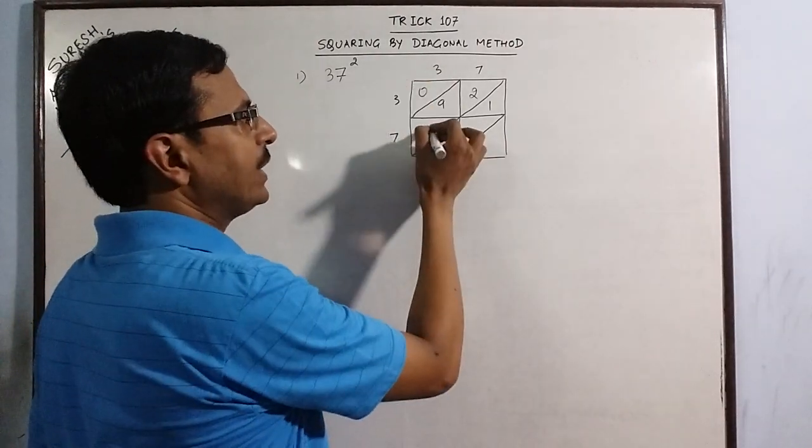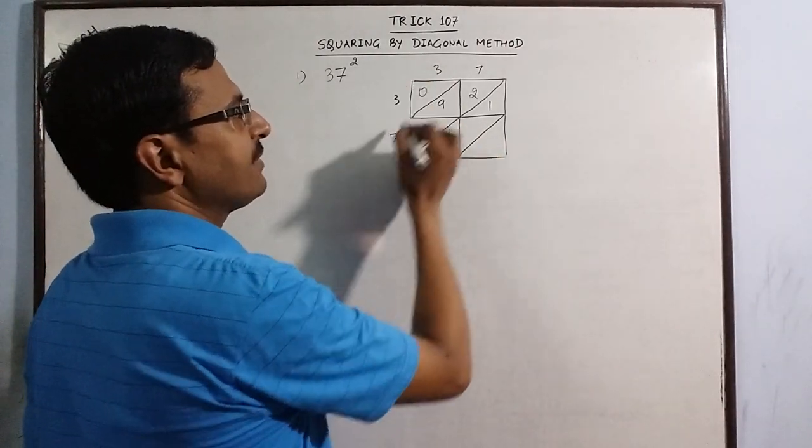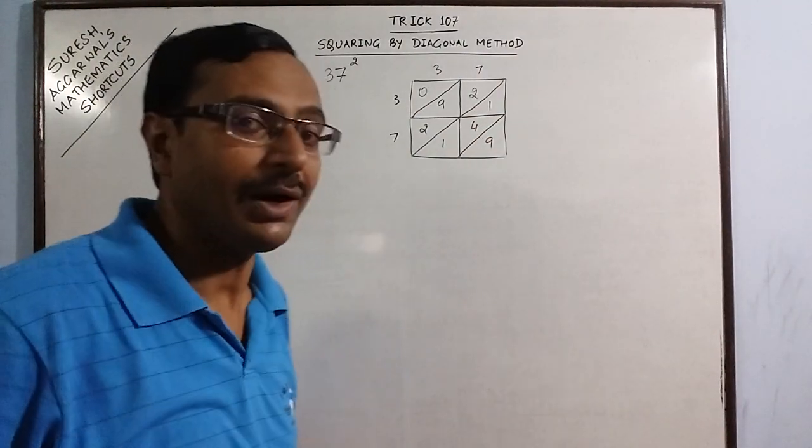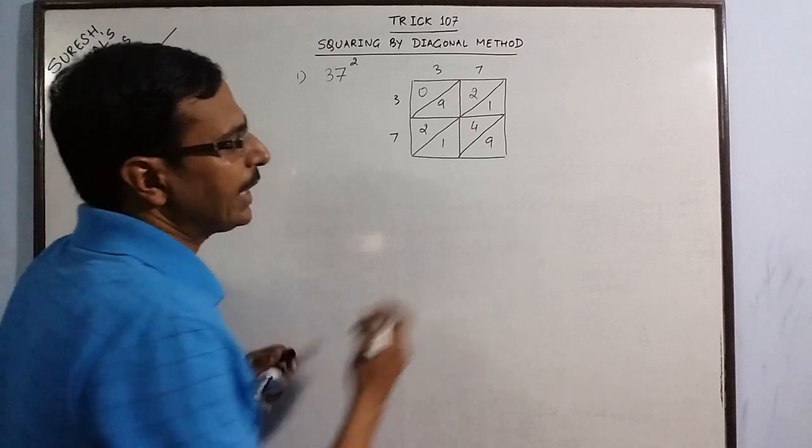Likewise, 7 into 3, 21 and 7 into 7, 49. And in the next step you will have your answer. Now go diagonally.